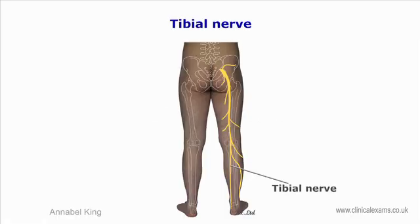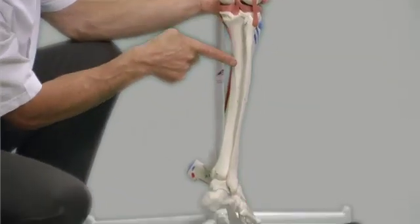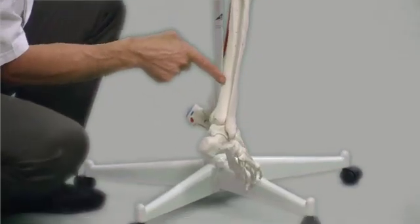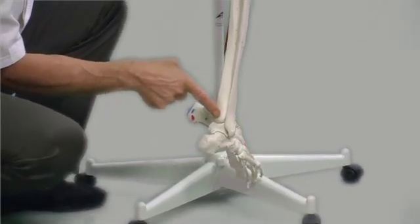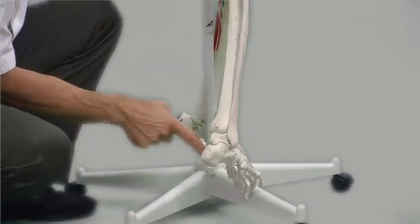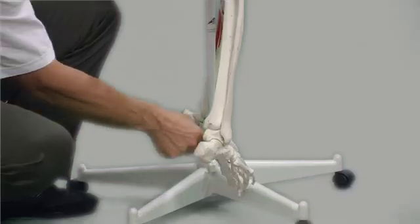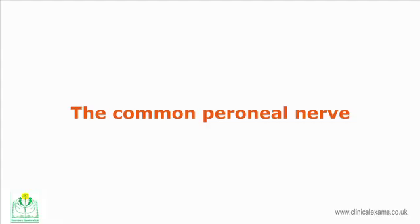The tibial nerve: from above the popliteal fossa it descends towards the ankle, supplying the calf muscles, before it passes posterior to the medial malleolus to supply structures of the foot.